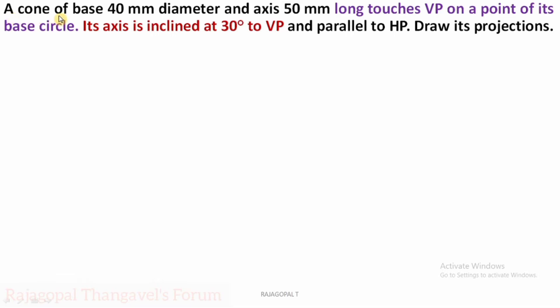Read the question: a cone of base 40 mm diameter and axis 50 mm long touches VP on a point of its base circle. Its axis is inclined at 30 degrees to VP and parallel to HP. Draw its projections.